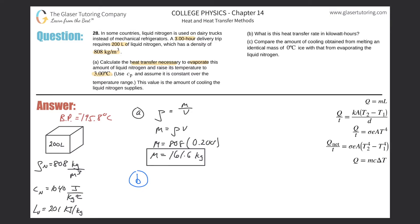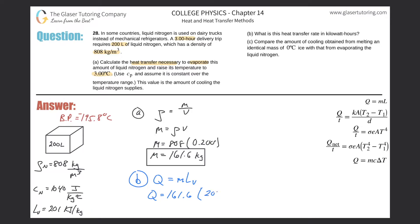Now we calculate the heat transfer necessary to evaporate the liquid nitrogen. This is a phase change, so we use Q = mL, where L is the latent heat of vaporization. The energy needed is the mass of liquid nitrogen, 161.6 kg, multiplied by the latent heat of vaporization.